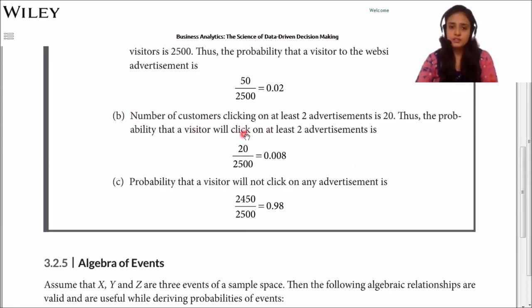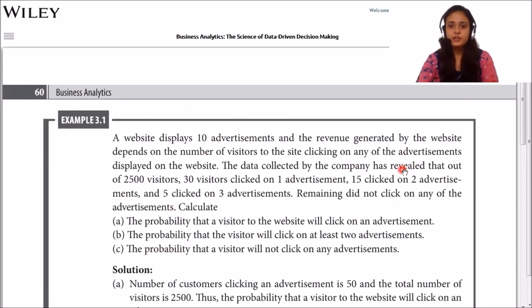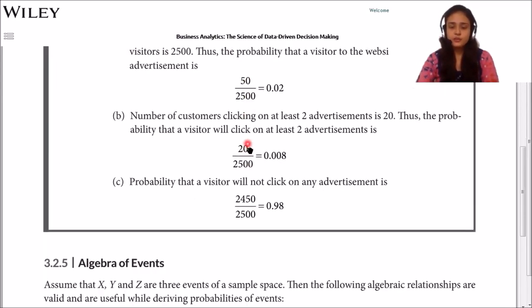The second probability is that a visitor will click on at least two advertisements. At least two means a minimum of two clicks. So we consider 15 plus 5, which gives 20. The probability is 20 divided by 2,500, giving 0.008. Therefore, the probability that a visitor will click on at least two advertisements is 0.008.